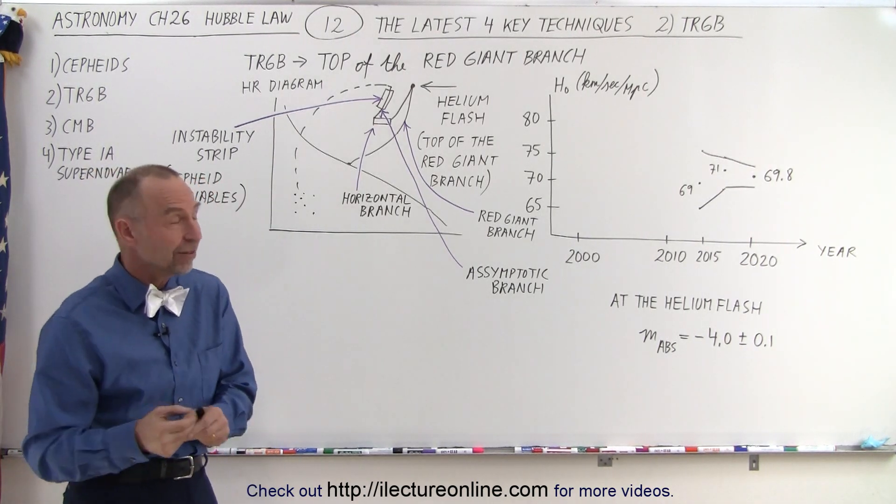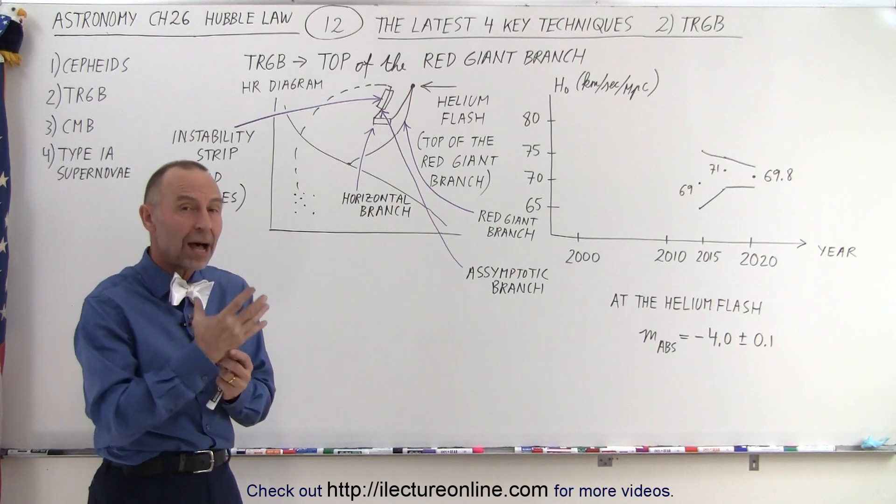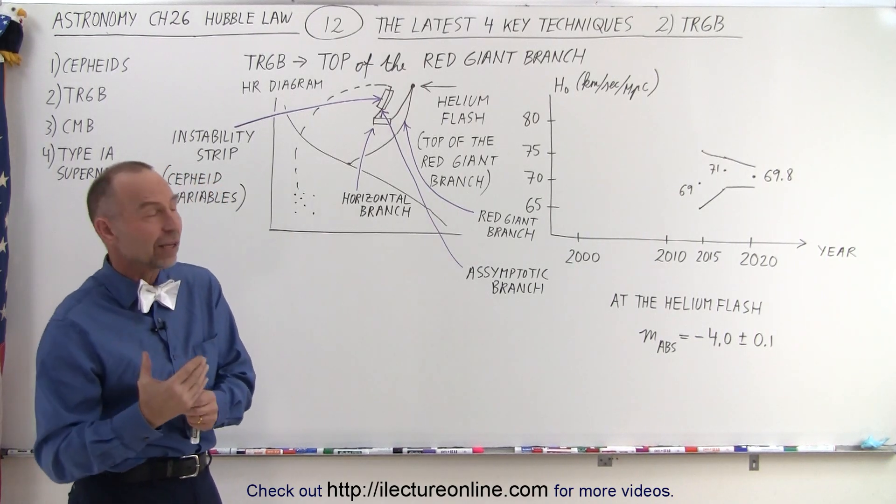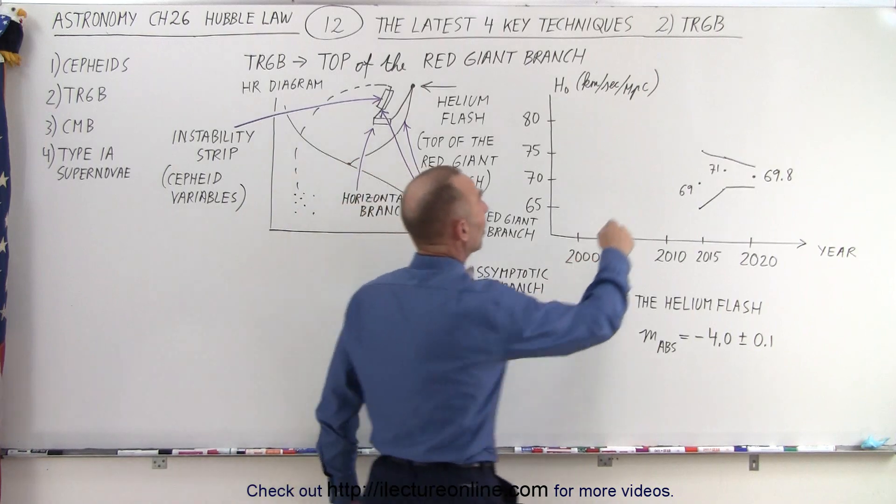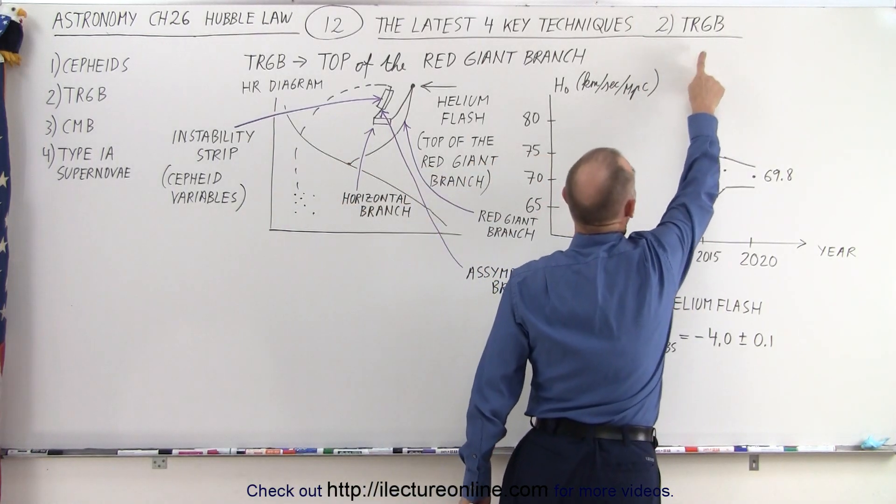RG stands for red giant. T stands for the top of the red giant and B stands for branch. So we read that as top of the red giant branch.